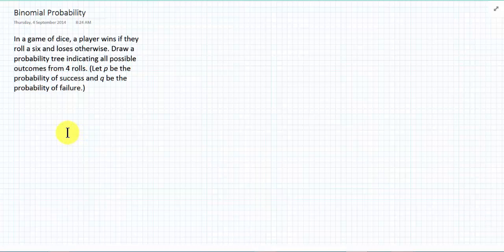I'm going to restart what we did on Thursday but hopefully explain it a little bit better. So we're talking about binomial probability and we're going to start with an example. The example we were looking at on Thursday was the situation of a game involving a dice and to win the game you need to roll a 6. Otherwise you lose.